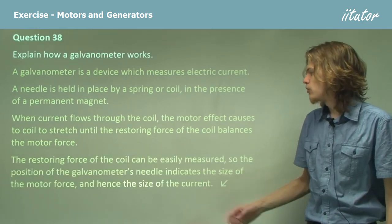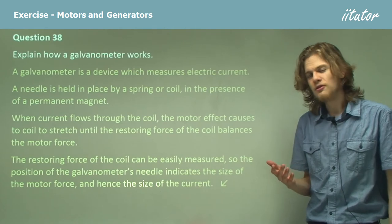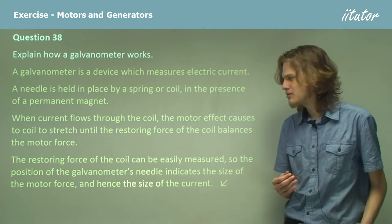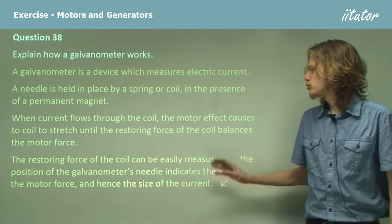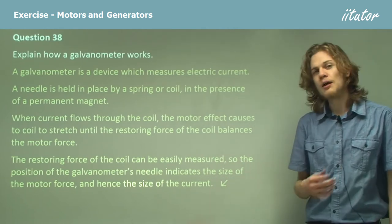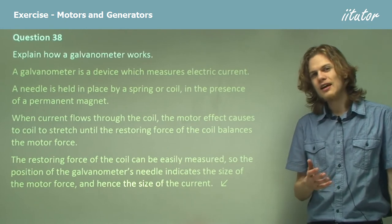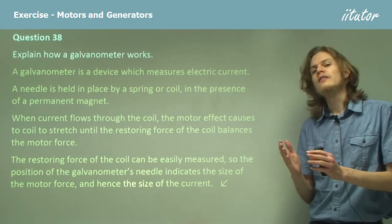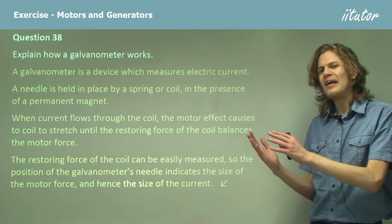The restoring force of the coil can be easily measured. There is in fact a fairly handy equation that will tell you exactly how much restoring force a spring has. So the position of the galvanometer's needle can be calibrated. We can say that if it's exactly this amount of force, then that'll equate to, you know, one ampere or something.